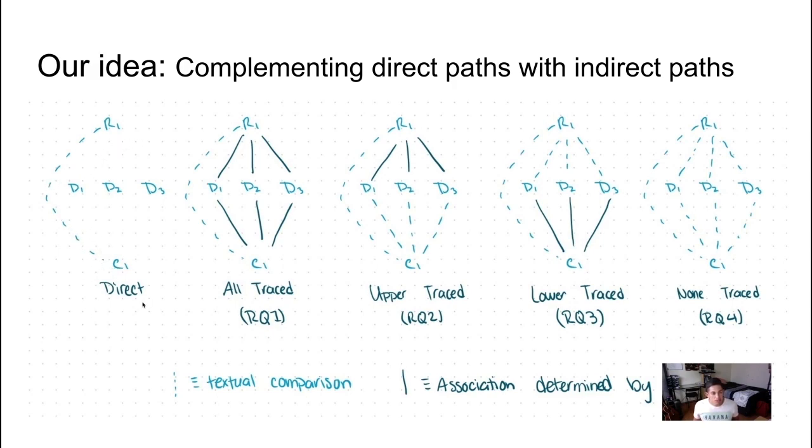What we tried to discover was, what if we use these design documents and are they of any use to this direct comparison? What we did was compare requirements to designs and designs to classes and through various aggregation methods that we'll go into later on, come out with a score that compares requirements to classes just like the direct method, but this new method goes through these different paths.